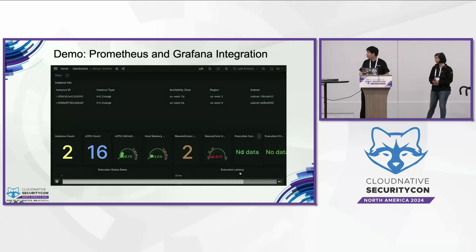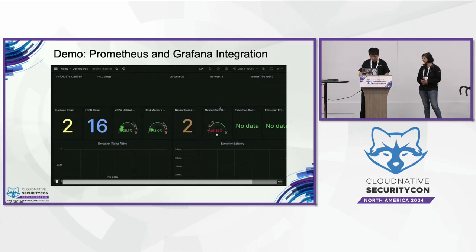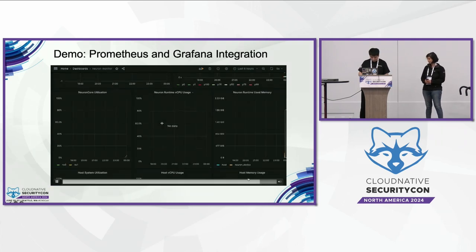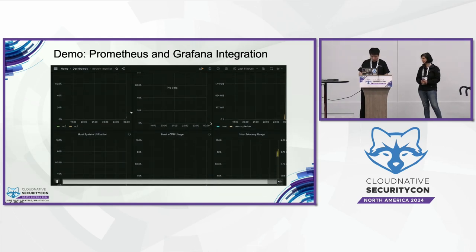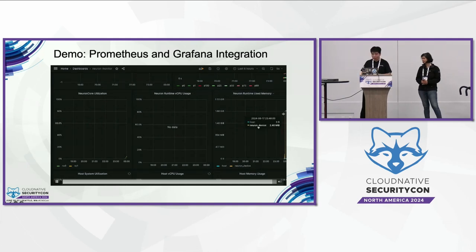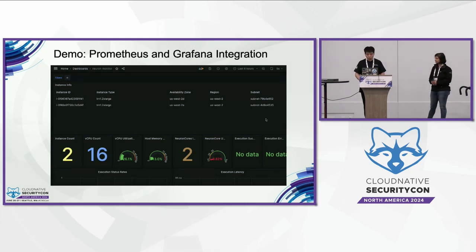Let's go back to the Grafana dashboard. Because of the workload, we can see there's some Neuron Core utilization. We can zoom in to find it's 3.8% usage. There are also other diagrams in the Grafana dashboard — for example, here we can see the Neuron Core utilization and the Neuron Runtime used memory. Both of them have a spike at the end caused by the recent workload.